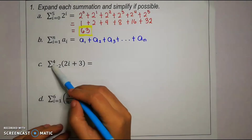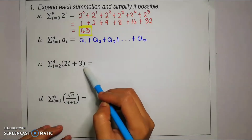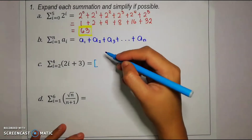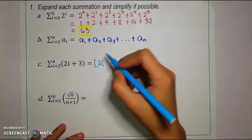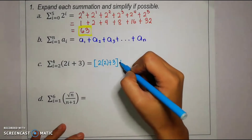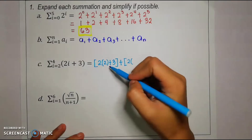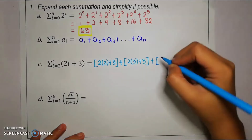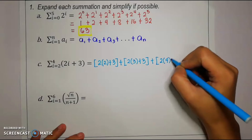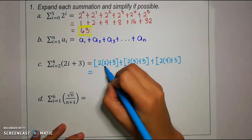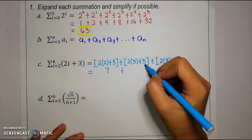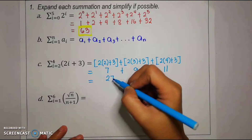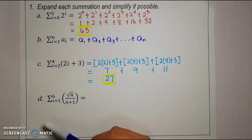Our third example is the summation of 2i plus 3 from i equals 2 to 4. We expand by replacing i with the values 2 to 4: we have (2 times 2 plus 3) plus (2 times 3 plus 3) plus (2 times 4 plus 3). After evaluating: 7 plus 9 plus 11, which sums up to 27. That is the sum of our series.